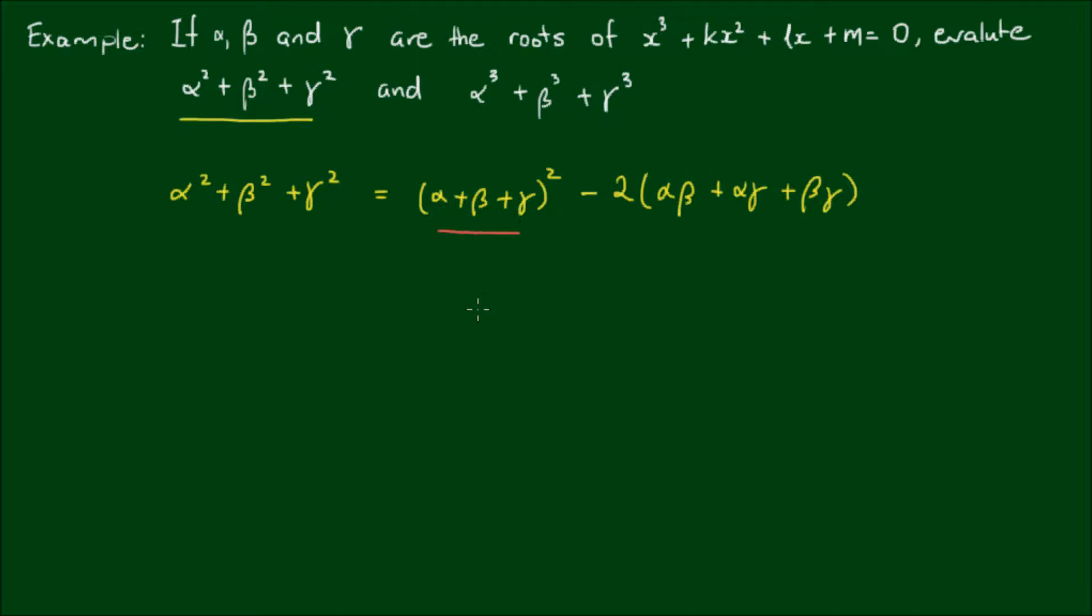Okay, so the sum of the roots is equal to the x² coefficient, negative of the coefficient I should say. So we have negative k² minus 2 times, well this is equal to the x coefficient, so we have minus 2 by L, and this simplifies to k² minus 2L.